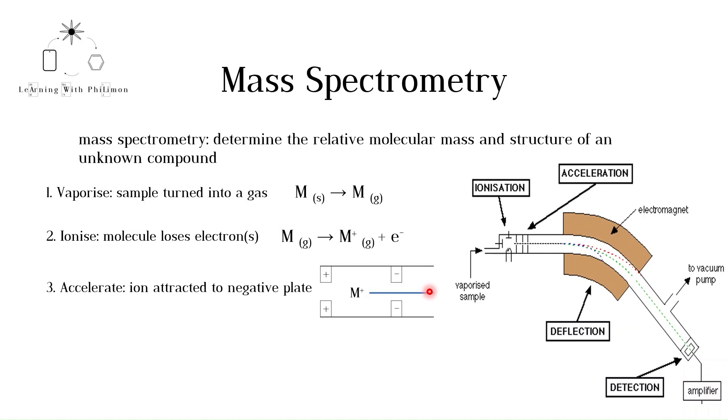The fourth step is deflection. To do this, a magnetic field is used. When a charged particle moves in a magnetic field, it experiences a force. This causes it to change direction. As can be seen in the diagram, a curved path is followed.